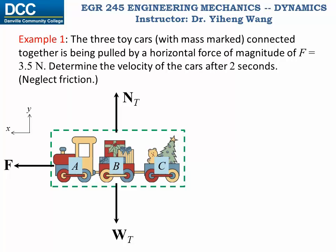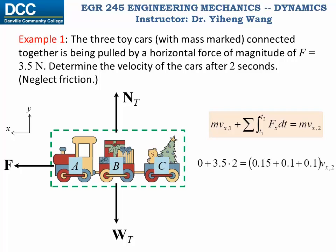Starting with the free body diagram, since there is only motion along the horizontal direction, we write the principle in scalar form along x. The initial velocity is zero, the force is constant so its impulse is 3.5 multiplied by 2 seconds, and that equals the total mass multiplied by the final velocity. Solving gives Vx₂ equal to 20 meters per second. Try solving this with equations of motion to compare which method is simpler.